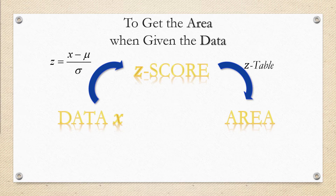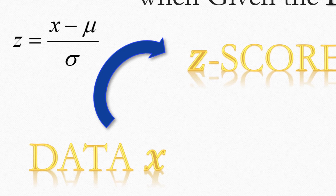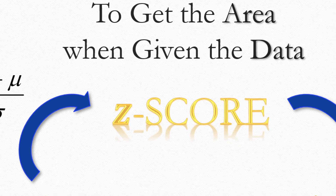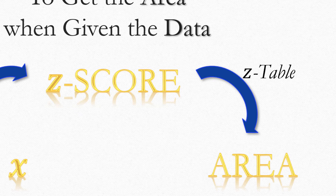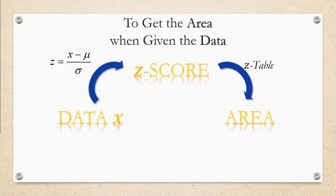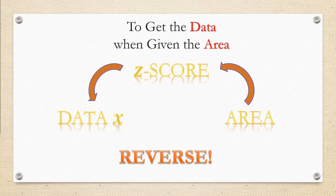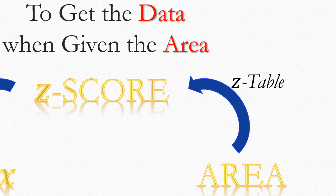So what are we going to do with this z-table? Normally, we're given a data value x, we use z equals x minus mu over sigma to convert it to a z-score, and then we take that z-score, look on the z-table, and find the associated area. But what if we're given the area and we want to get back to the z-score or even possibly the data value? Then we have to reverse that process. The first thing we're going to do is take the area and look up the associated z-score on the z-table.